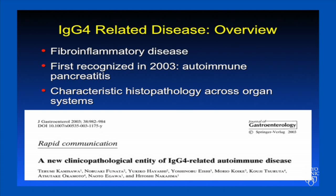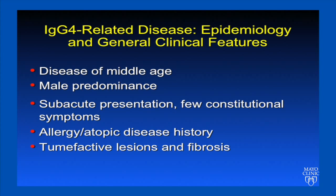So what is IgG4-related disease? It is a fibroinflammatory disease that was first described in 2003 in cases of autoimmune pancreatitis related to IgG4, and the disease has a characteristic histopathology across many organ systems. It is a disease of middle age with male predominance. Patients present subacutely with few constitutional symptoms, typically have a history of allergy or atopic disease, and lesions can be either tumefactive or fibrotic.